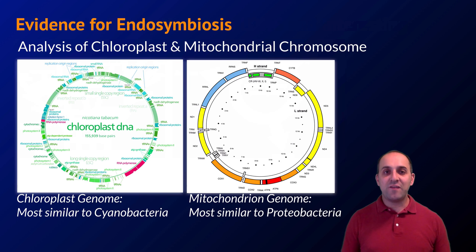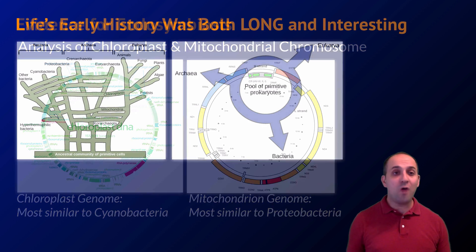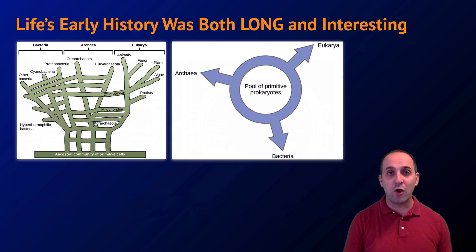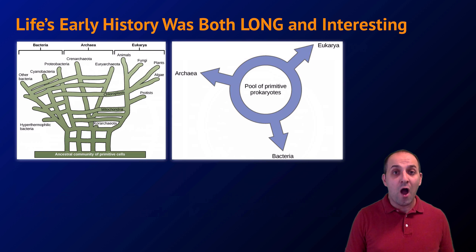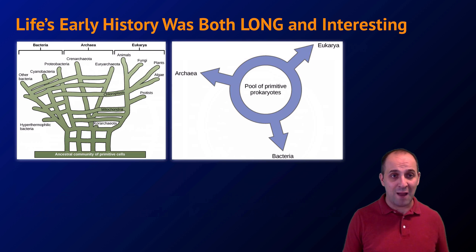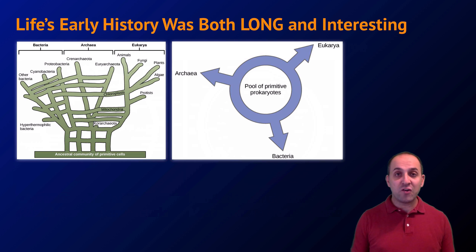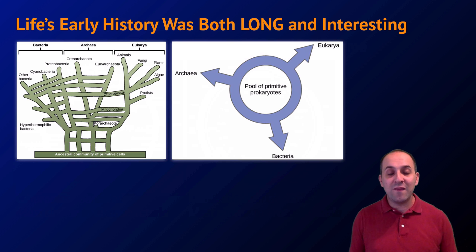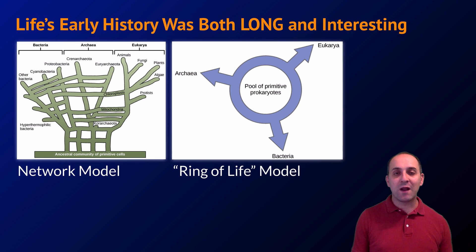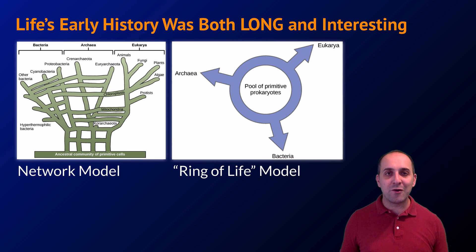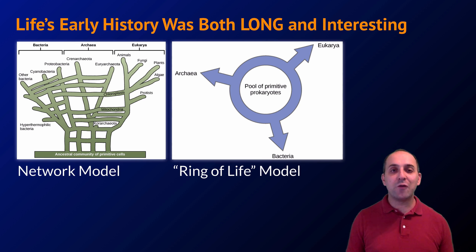Endosymbiosis illustrates a larger point: not only was the early history of life, when it was unicellular and largely prokaryotic, a very long period of time, but it was also a really interesting time. A lot of exchange of information and structures was happening between different lineages before the modern three-domain system of life emerged. Some people talk about a network model or a ring of life model — worth Googling if you're interested in learning more.